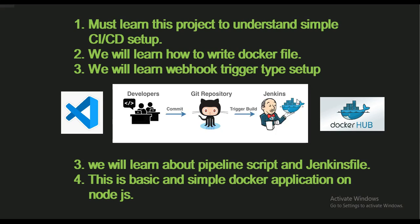After creating the image, we are going to run the container for it. It is a simple Docker application — we are going to download the sample application from Docker Hub, as it is already provided there, and we need to write a Dockerfile so we can create the image. This is the overall process, so let's start the project.